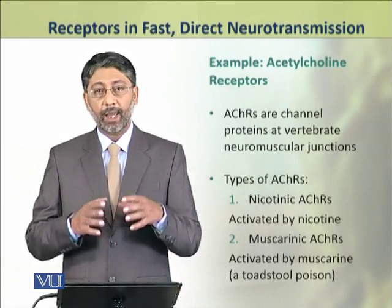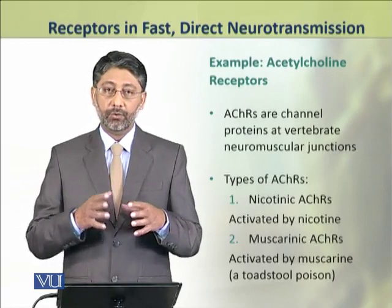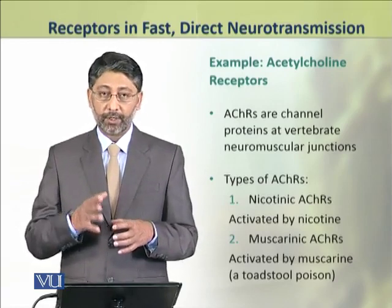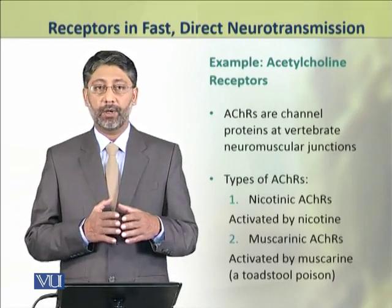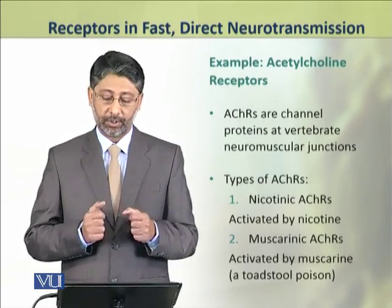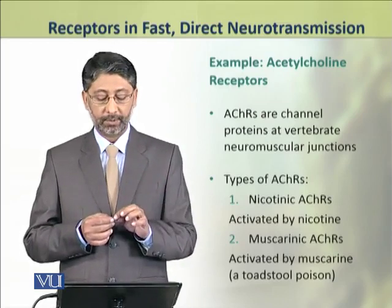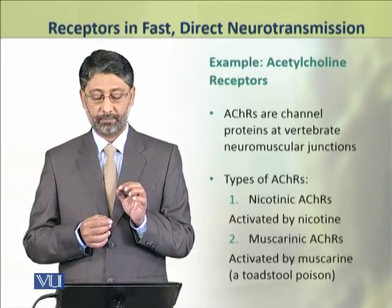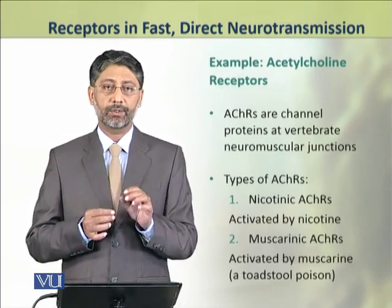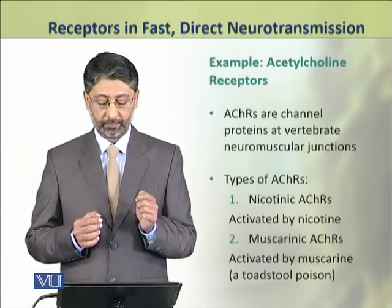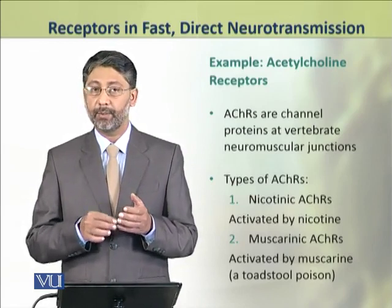We shall take an example of acetylcholine receptors to explain the functioning of such receptors which are involved in fast and direct neurotransmission. The acetylcholine receptors are channel proteins. They are found at the neuromuscular junctions of vertebrates. There are two types of acetylcholine receptors in the body.